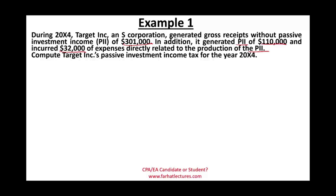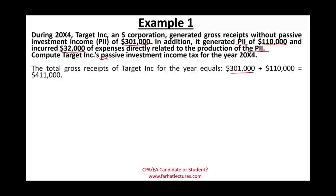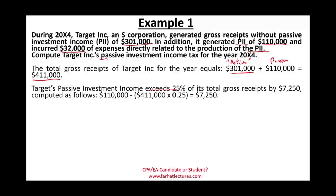We'll compute the passive investment income tax penalty. Total gross receipts: $301,000 active plus $110,000 passive equals $411,000. To check if PII exceeds 25%: $411,000 × 25% = $102,750. Target's PII of $110,000 exceeds $102,750 by $7,250. So passive income exceeds 25% of gross receipts by $7,250.